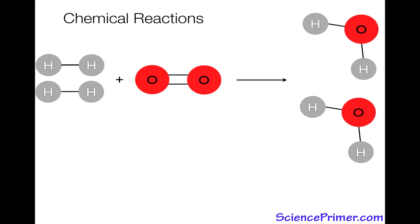What balancing the equation means is that matter, the atoms involved in the chemical reaction, cannot be created or destroyed. So we need the same number of atoms on one side of the reaction as we have on the other.